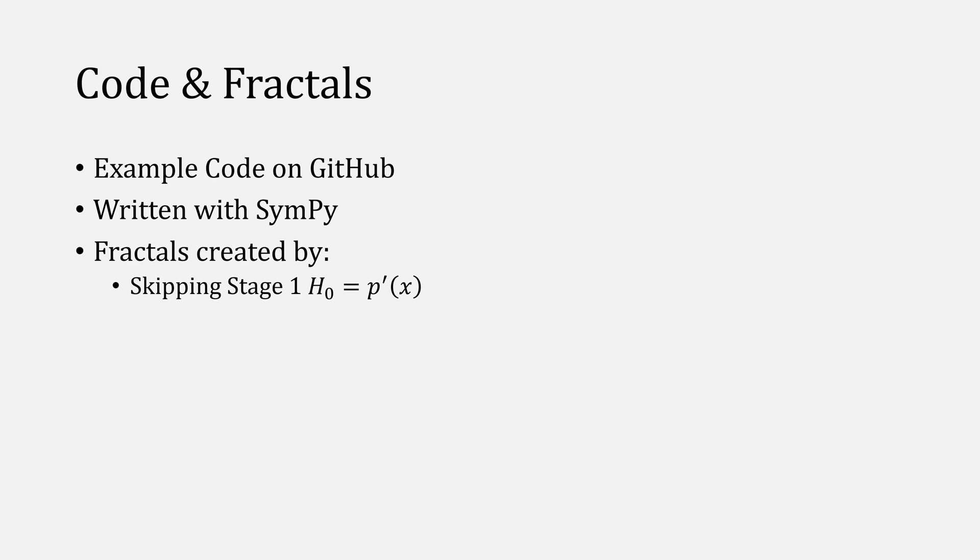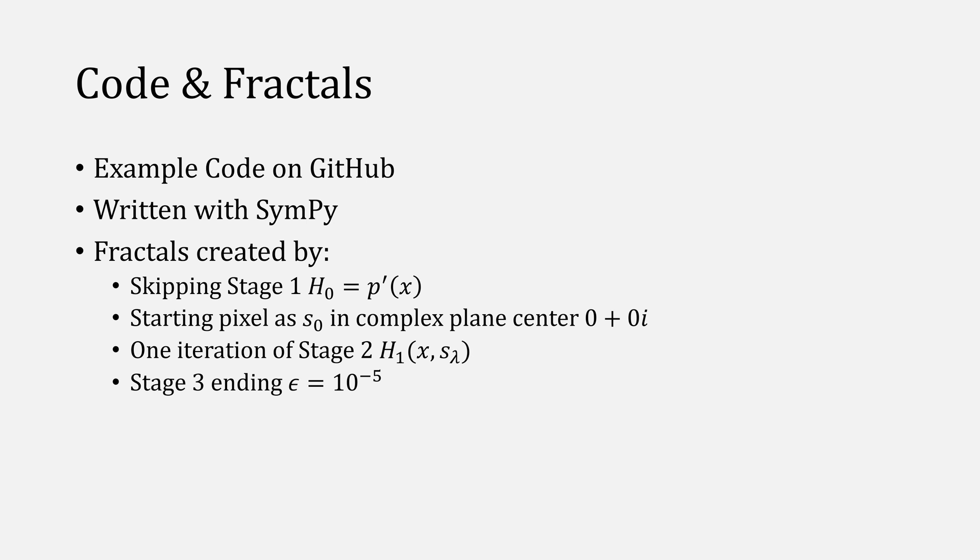The example code that I wrote for this video is available on GitHub, and I actually wrote it in SymPy to make the writing and reading easier, but it is a little bit inefficient. I also then made fractals using this method by first skipping stage one, just letting h be the derivative, and using the starting pixel in the complex plane as our guess for s, then doing one stage of stage two, and afterwards just applying stage three until it converges. Note that I'm not coloring by the roots, only in the number of iterations.